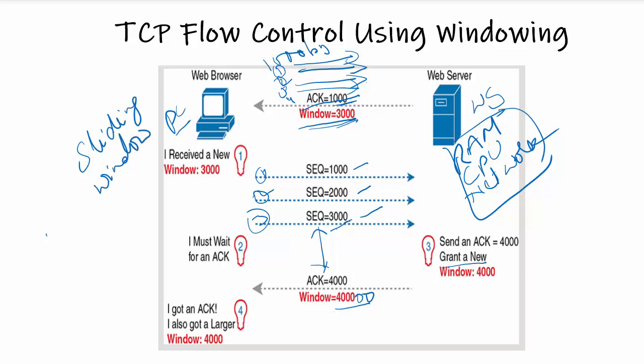The TCP acknowledgement 4000 is received by the PC along with the window size of 4000. The PC notes this and starts sending four TCP segments in one go — one, two, three, and four — of 1000 bytes each, totaling 4000 bytes. In simple terms, based on the window size given by the receiver, the sender PC adjusts its window size. UDP data transfer differs from TCP in that no reordering or recovery is accomplished.